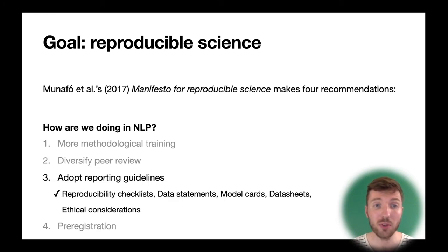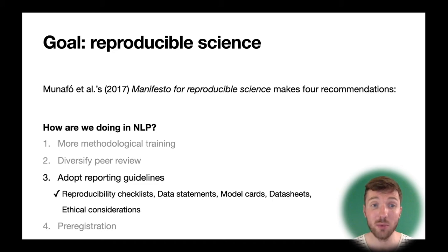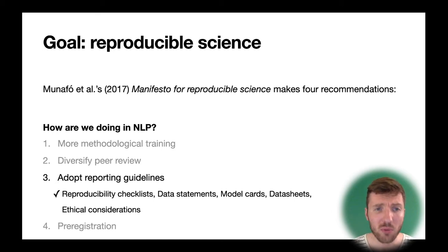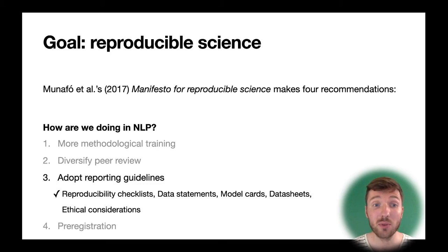On the third point of adopting reporting guidelines, there's also been quite a bit of work. There's a recent proposal for reproducibility checklists that people fill in when they submit their papers. Many people also include data statements, model cards, and data sheets nowadays to document the strengths and weaknesses of their models and the properties of their datasets. The field is also becoming more reflective by including ethical considerations at the end of papers. I think we're doing pretty well here.